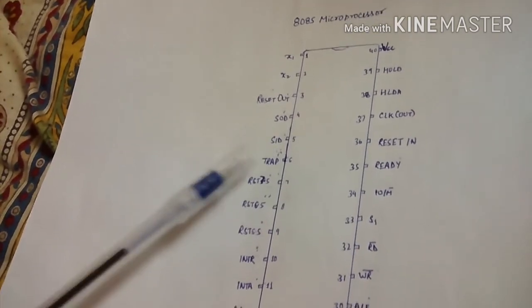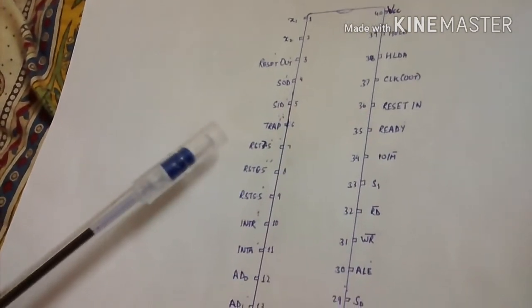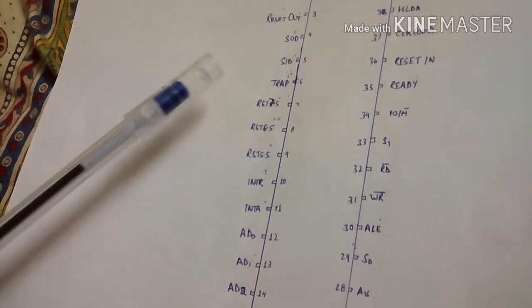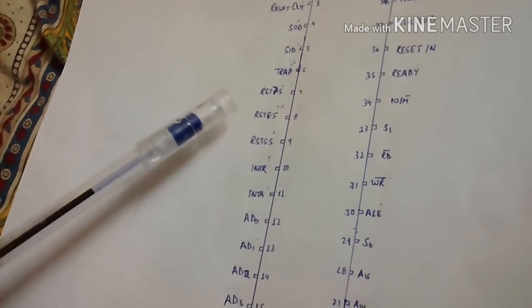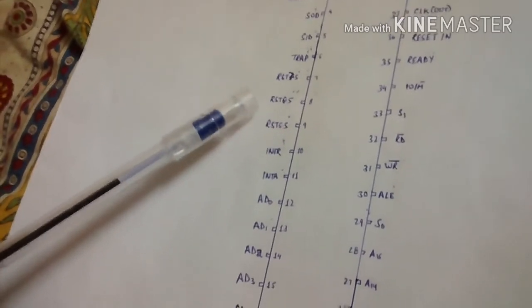They trap them and ask for ransom, 7.5 crores. Now they don't have enough money. They say let's give 6.5 crores. They don't have enough money. They say let's give 5.5 crores.